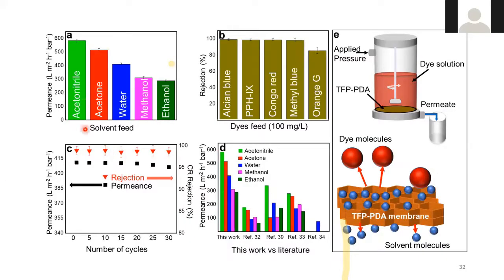Our COF membrane is stable in both water and organic solvents, making it multipurpose — suitable for organic solvent nanofiltration and aqueous separation. The permeance is extremely high; for acetonitrile it reaches 4589. We separated various dyes with this membrane and achieved good rejection for most, except orange G, whose size is smaller than the membrane pore size.